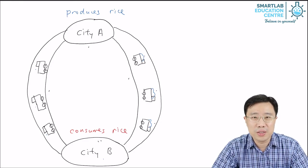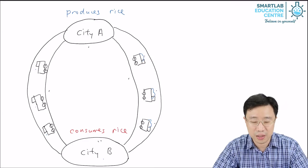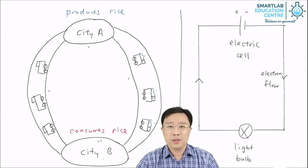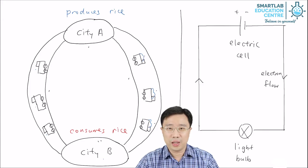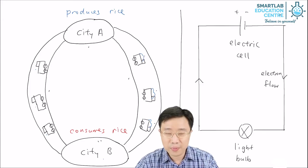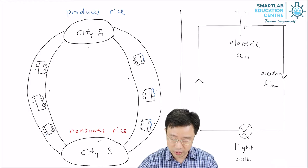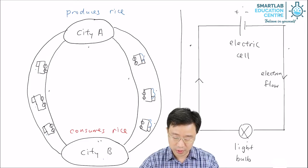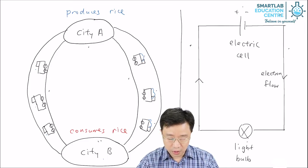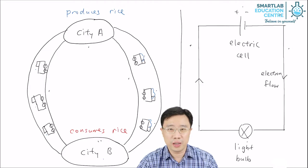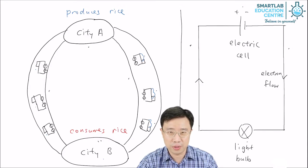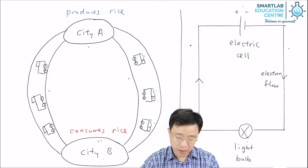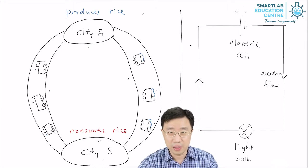Now what does this have to do with an electric circuit? So as you can see, I have an electric circuit here. I have an electric cell, it's connected to a light bulb by wires. Now what is happening in the electric circuit is similar to what is happening in the story of City A and B.